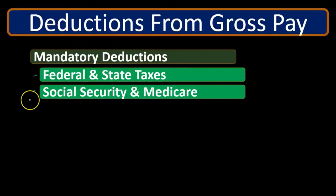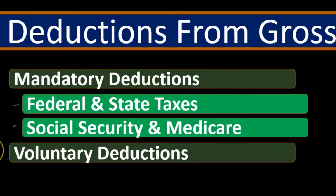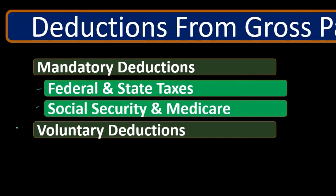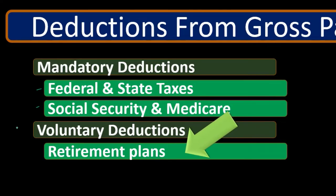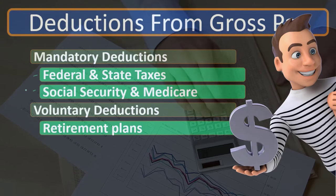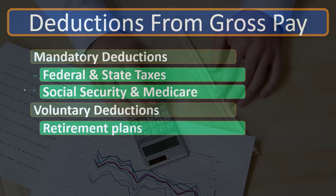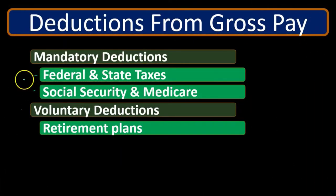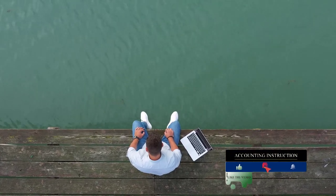The payroll taxes to the employer will be the employer portion of Social Security and Medicare, and other things like FUTA — Federal Unemployment Tax. Then we have voluntary deductions as we work our way from gross pay down to net pay. Those are going to be things like retirement plans. The mandatory deductions are really the responsibility of the employee, and we can think of the business as doing us a favor by taking them out of our paycheck directly and making the payment for us.